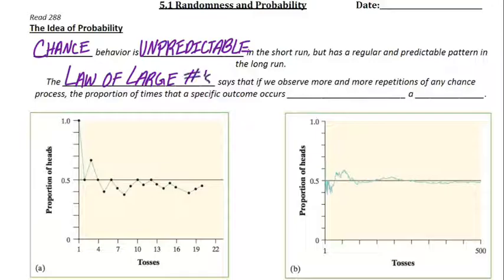So, the first concept is the law of large numbers. It says that if we observe more and more repetitions of any chance process, the proportion of times that a specific outcome occurs approaches a single value.